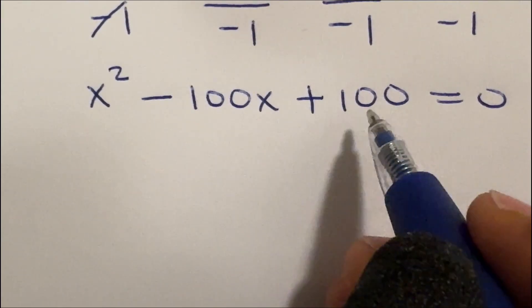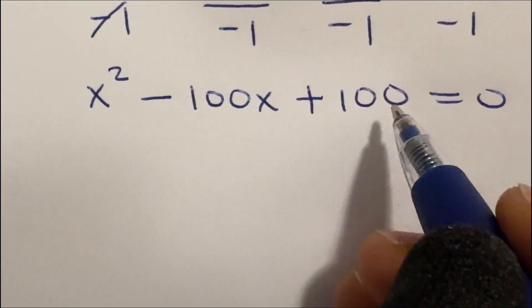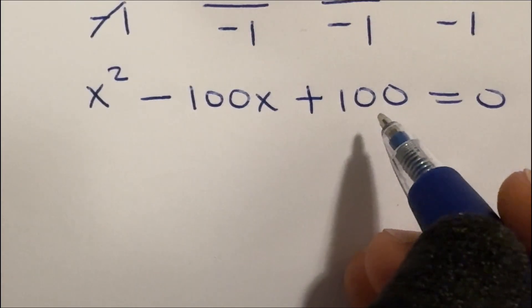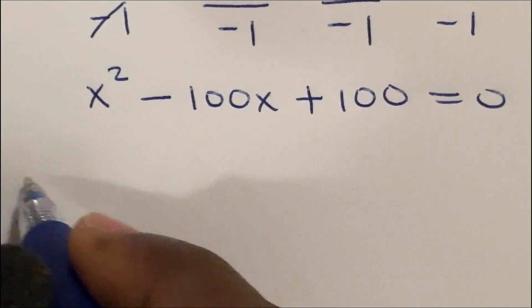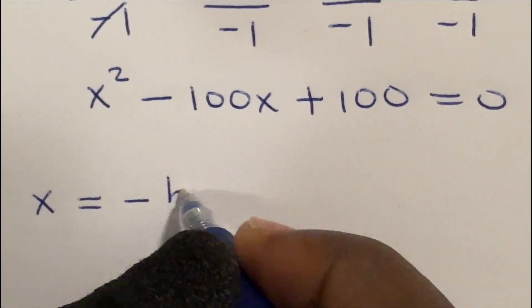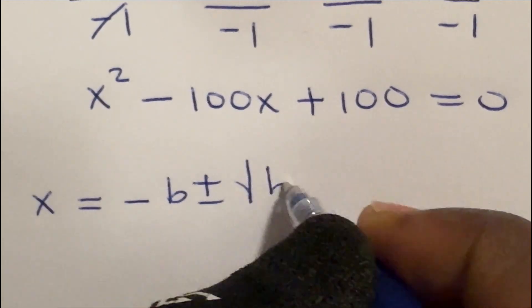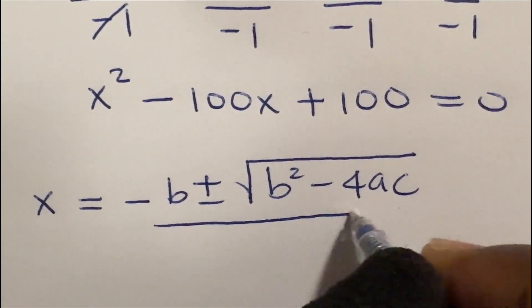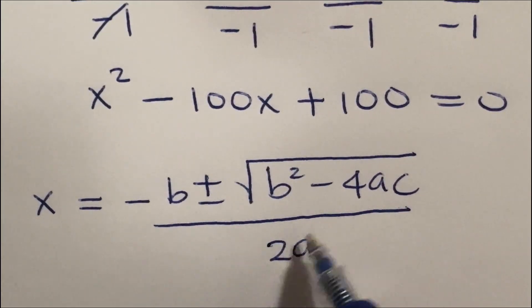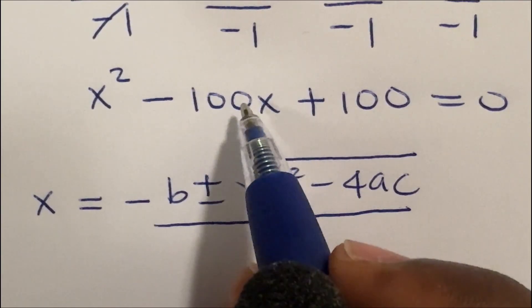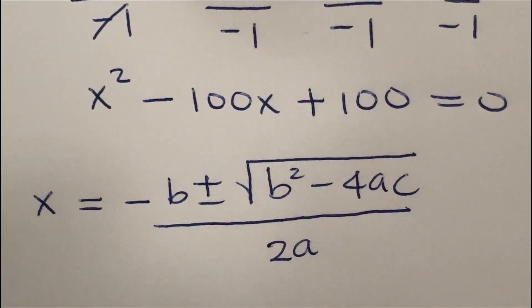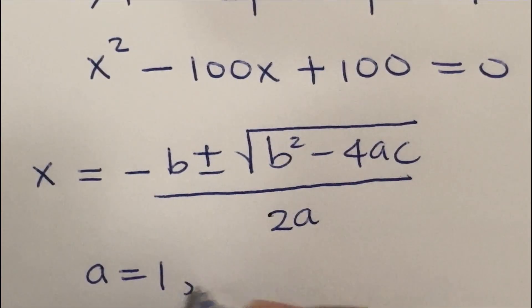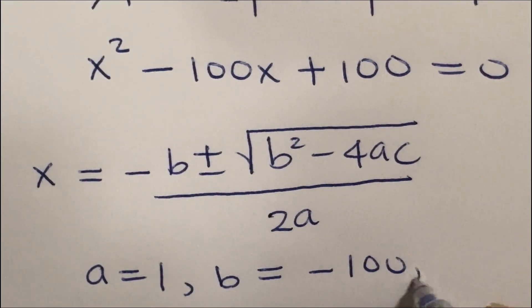The factors of 100 such that when multiplied together give us 100 but when added together also give us 100 — that is going to be a tough one to crack. So I'm just going to use the general quadratic formula to find x. The formula says: x equals negative b plus or minus the square root of b squared minus 4ac, divided by 2a. Here a, b, and c are the coefficients of x squared, x, and the constant term respectively. In this case, a is 1, b is negative 100, and c is 100.